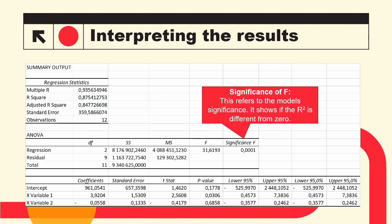Next, we look at the F-statistic and, more importantly, the significance of F. This shows whether the model as a whole is significant — specifically, it tests whether the R-squared is different from zero. In order for our model to be significant, we want the R-squared to be different from zero. At 95% confidence, we expect the significance of F to be less than 0.05. In this example it is less than 0.05, so the overall model is significant.